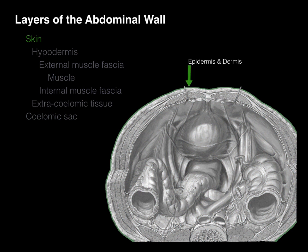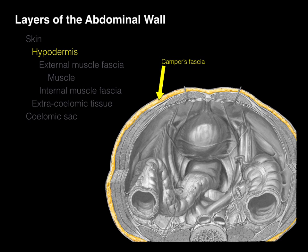The skin is the very outside layer, comprised of the epidermis and the dermis. The epidermis is stratified squamous epithelium with keratin, and the dermis is dense connective tissue. The prefix hypo means below, so the hypodermis is the layer below the dermis, primarily fat. In the abdomen there are two layers: Camper's fascia, the superficial layer of the hypodermis made primarily of adipose tissue, and Scarpa's fascia, a deeper layer of dense connective tissue.